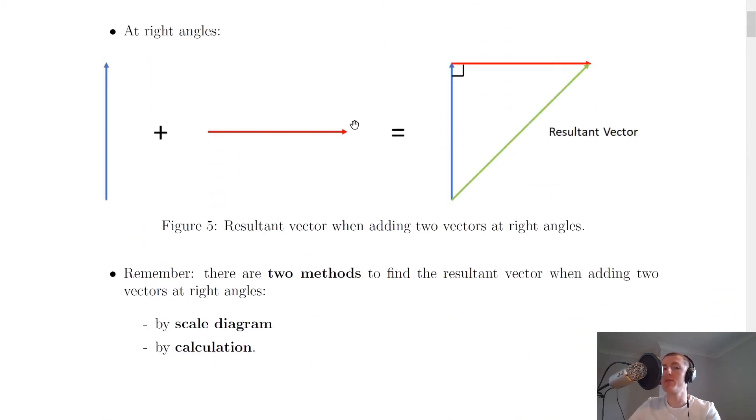And looking at the resultant vector for the case of adding vectors at right angles, you'll see that if we added this one to this one just as before, we end up with a resultant vector that looks like this, because we're going from the starting point to the finishing point, and it's the shortest distance.